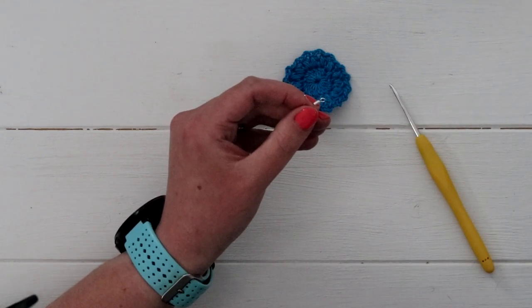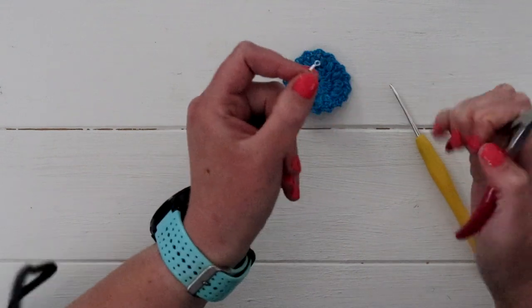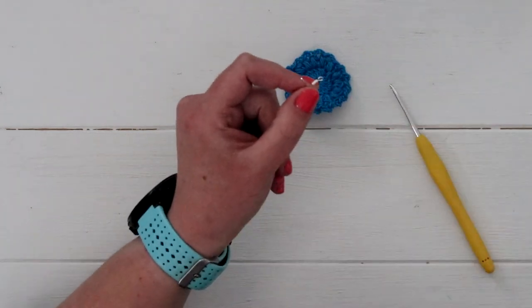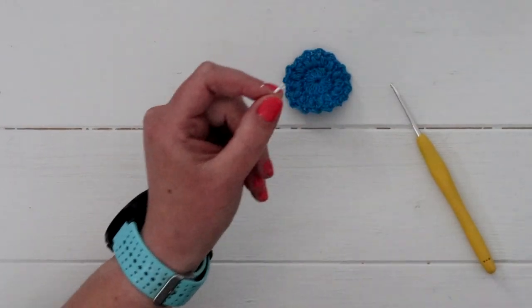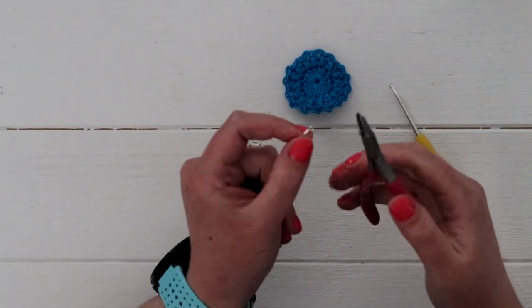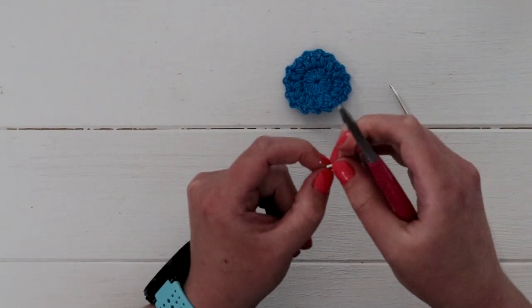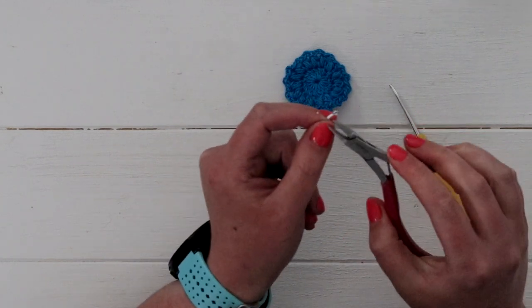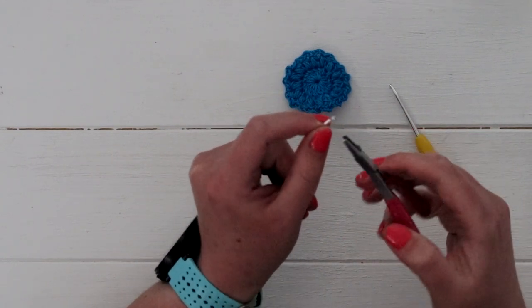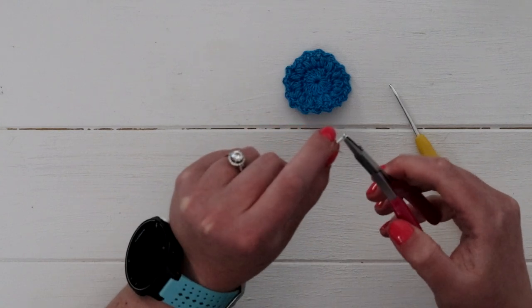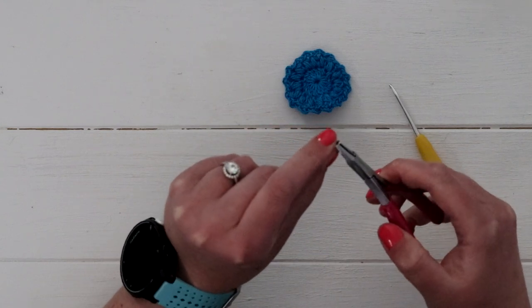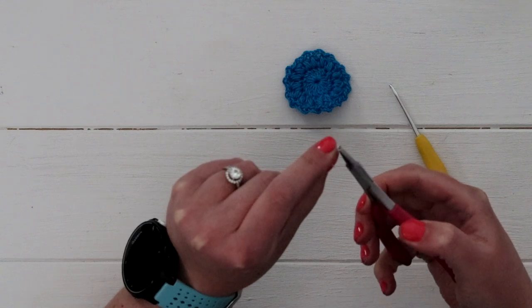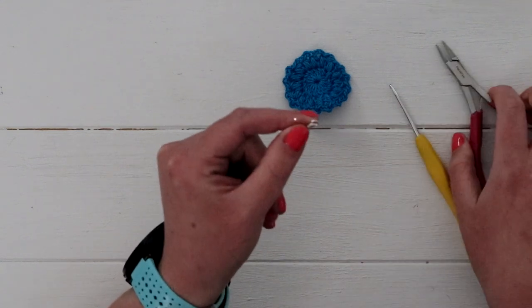So you will need your earring, and your pliers, or honestly you'll be able to do this with just your finger too. You'll just need to pop open this little loop on your earrings. So you'll just kind of gently pull it. Or again, totally possible to just do it with your fingers.